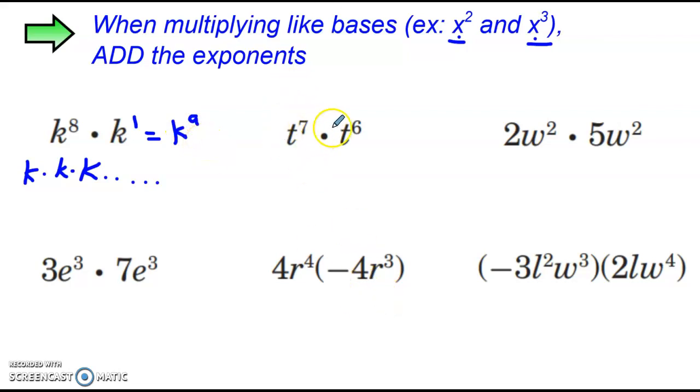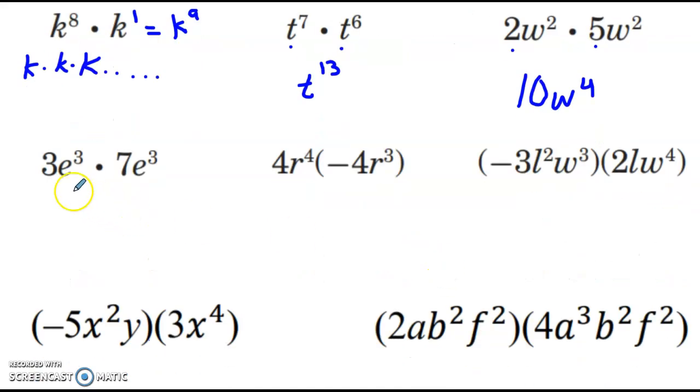Now I have t to the 7th times t to the 6th. The bases are the same, so we just add the exponents. This would be t to the 13th power. Now I can also do this when there's constants. Don't confuse this with the exponents - we're multiplying everything that we can here. The constants 2 and 5 multiply to give us 10, and then w squared times w squared is w to the 4th. I just add the 2 and the 2. Same rule here. If I have 3e to the 3rd times 7e to the 3rd, my constants 3 and 7 multiply to give me 21, and then I multiply e to the 3rd times e to the 3rd to get e to the 6th.